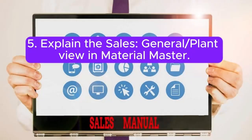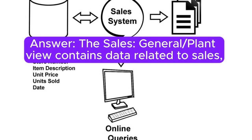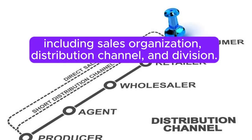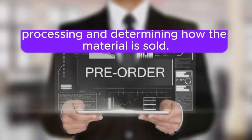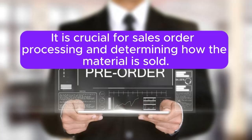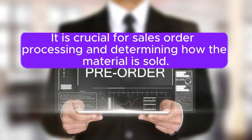Question 5: Explain the Sales General/Plant view in Material Master. The Sales General/Plant view contains data related to sales, including sales organization, distribution channel, and division. It is crucial for sales order processing and determining how the material is sold.